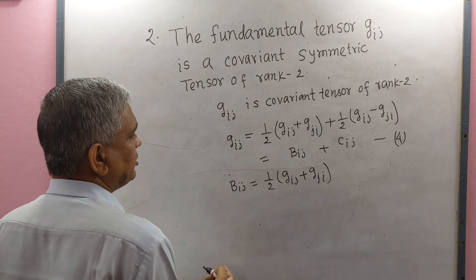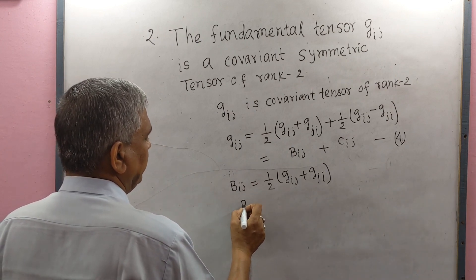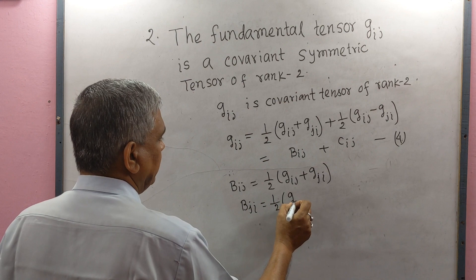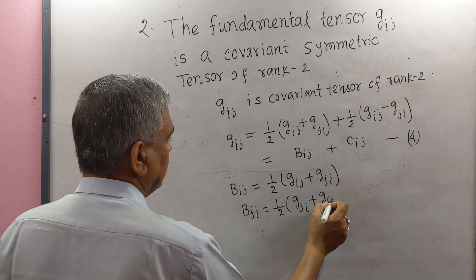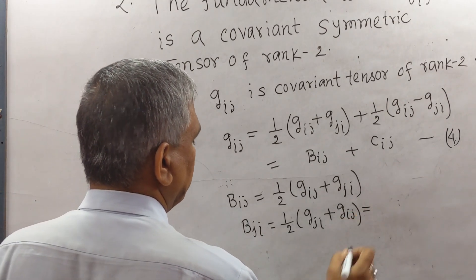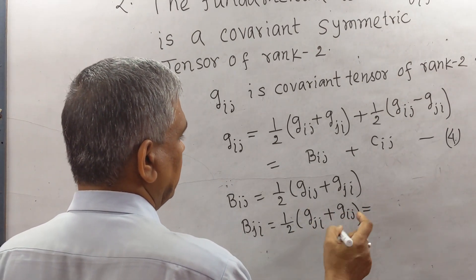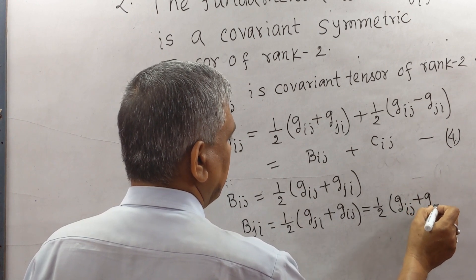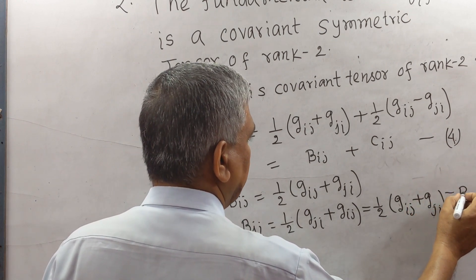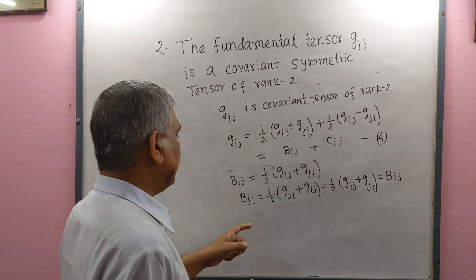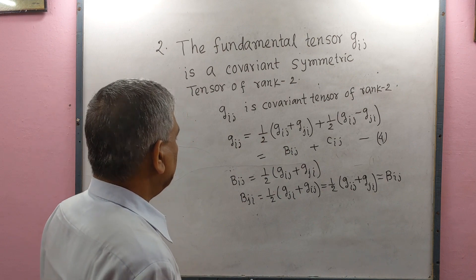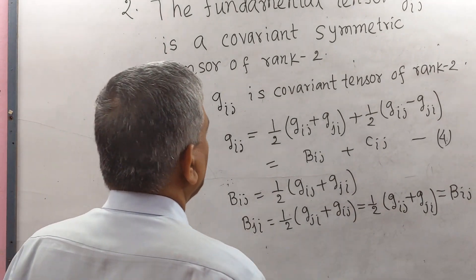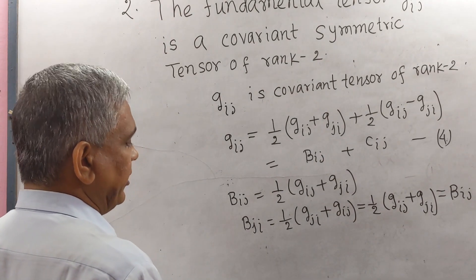Interchanging suffixes I and J on both sides of B_IJ = (1/2)(g_IJ + g_JI), we get B_JI = (1/2)(g_JI + g_IJ). By the commutative law this equals (1/2)(g_IJ + g_JI) = B_IJ. So B_IJ is a symmetric tensor.